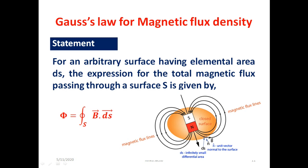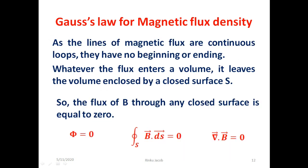We repeat this measurement over the whole Gaussian surface. The total flux is mathematically written as phi equal to the surface integral over closed surface S of B dot ds. As the lines of magnetic flux are continuous loops, they have no beginning or ending. So whatever flux enters a volume, it leaves the volume enclosed by the closed Gaussian surface S, meaning the flux through any closed surface equals zero: phi = 0. The equation becomes the surface integral over closed surface S of B dot ds equal to zero. In differential form, we write divergence of B equal to zero, that is del dot B = 0.